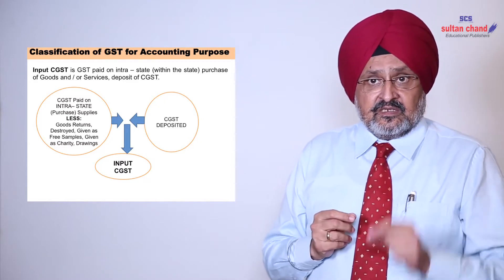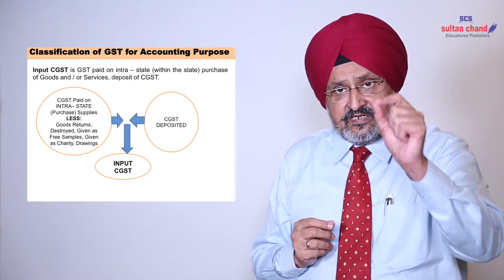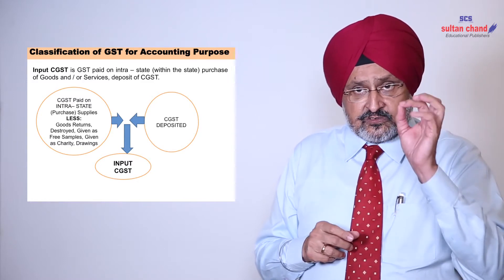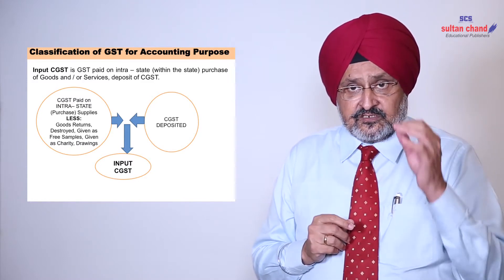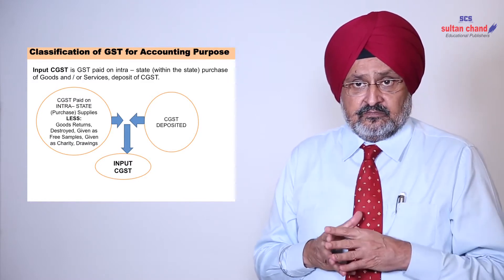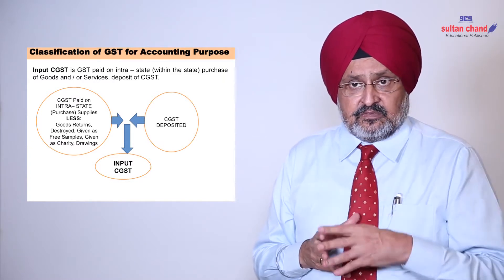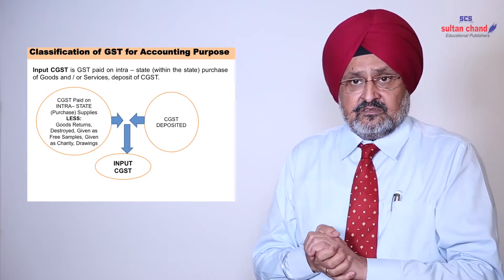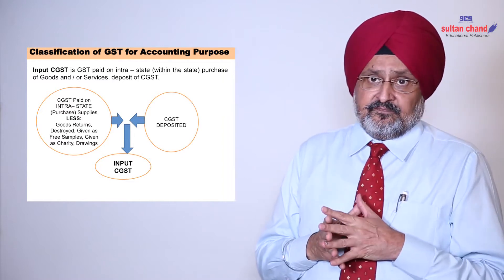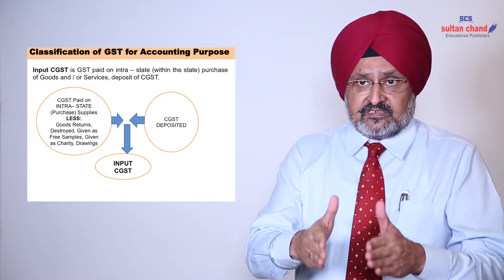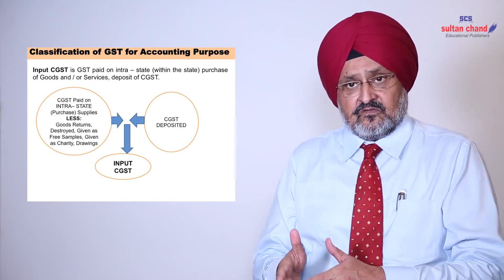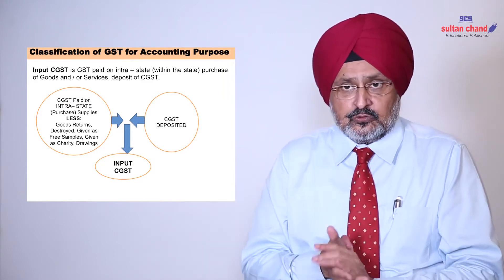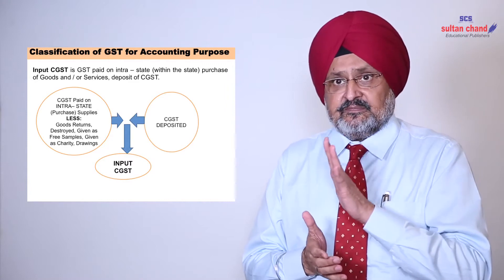That means CGST paid on intrastate purchase less goods returned, destroyed, given as free samples, given as charity, or taken as drawings — is input GST — plus what CGST has been deposited. This total comes to input CGST.